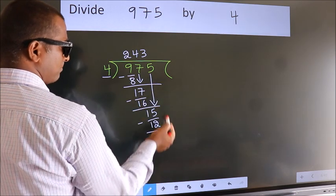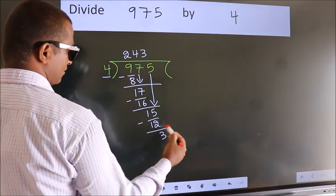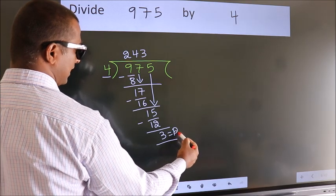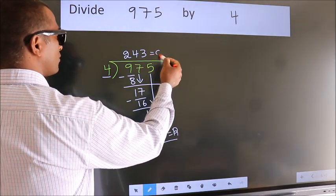No more numbers to bring it down. So we stop here. This is our remainder. This is our quotient.